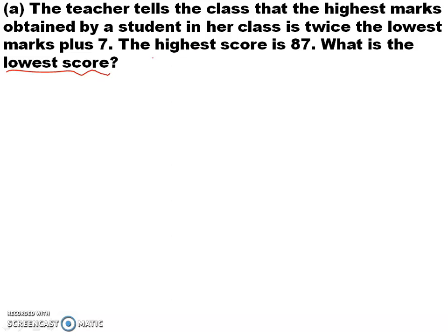What is given in the question? You are given that the highest score is 87. What is the relation between lowest score and highest score? The relation is: twice the lowest mark plus 7 is the highest score. Twice means two times. Two times the lowest mark plus 7 is equal to the highest score. This is what you have to understand after reading the question.